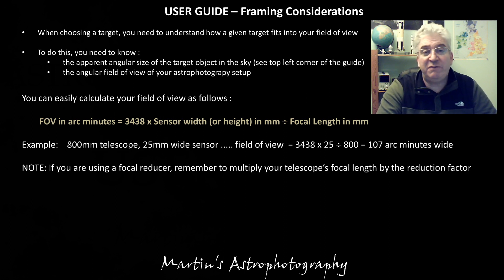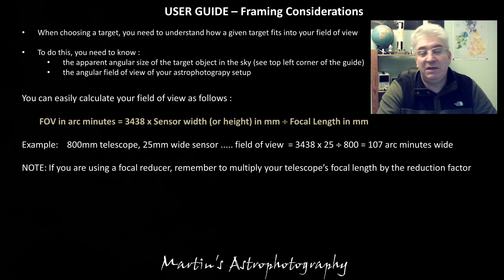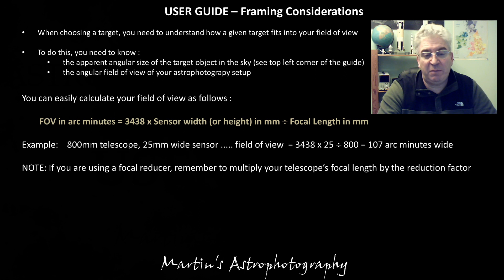Remember that if you're using a focal reducer you need to modify your telescope focal length in the equation by multiplying it by the factor first — so for a 0.7 focal reducer, multiply your telescope focal length by 0.7.